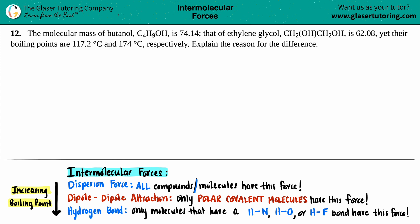Number 12. The molecular mass of butanol, which is C4H9OH, is 74.14. That of ethylene glycol, which is CH2OHCH2OH, is 62.08. Yet their boiling points are 117.2 degrees Celsius and 174 degrees Celsius, respectively. Explain the reason for this difference.